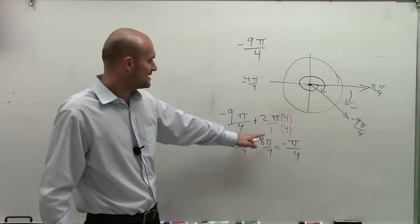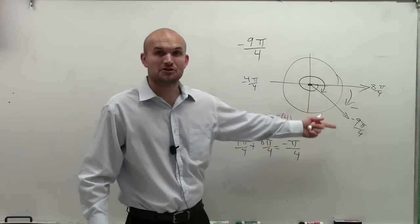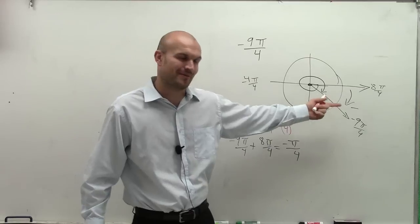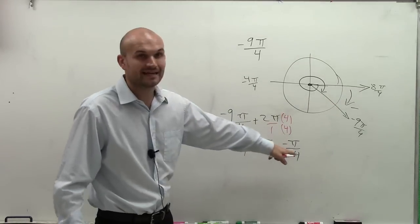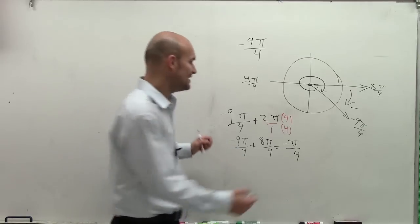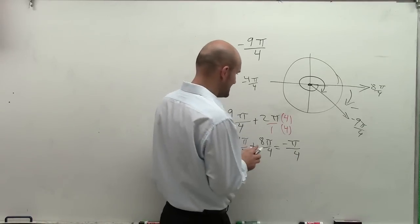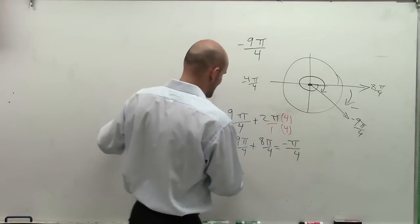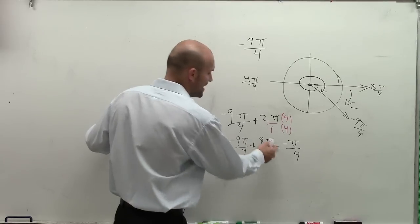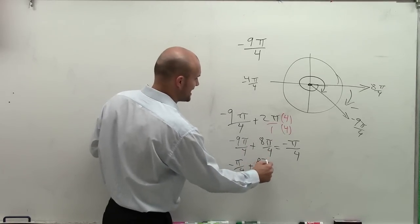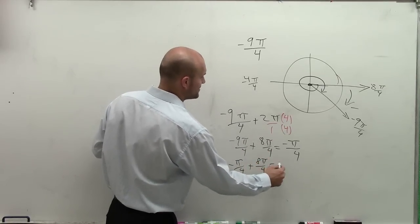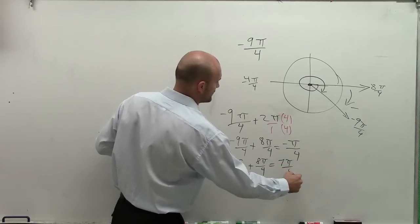Well, if I just wanted to, again, find another coterminal angle, I'm sorry, I still have the negative. I still need to find a positive. So I can just add 2 pi onto that again. So if I just take negative pi over 4, add 2 pi again, which is really the same thing as 8 pi over 4, I end up getting 7 pi over 4.